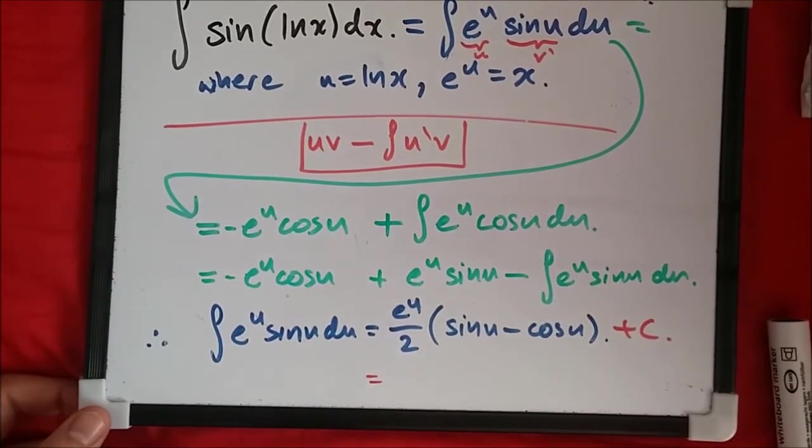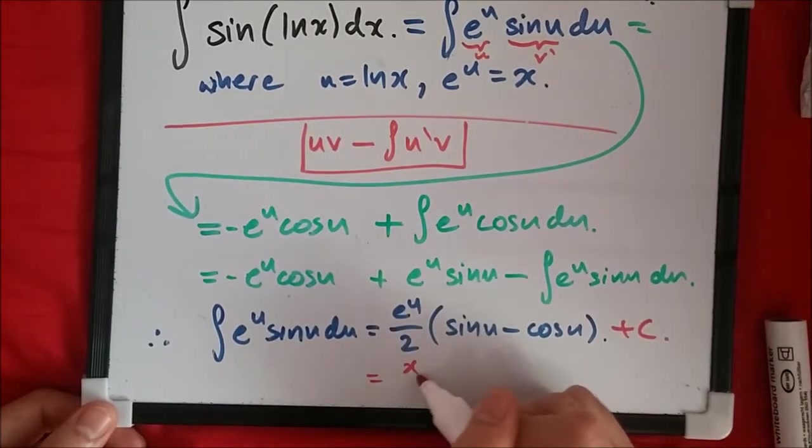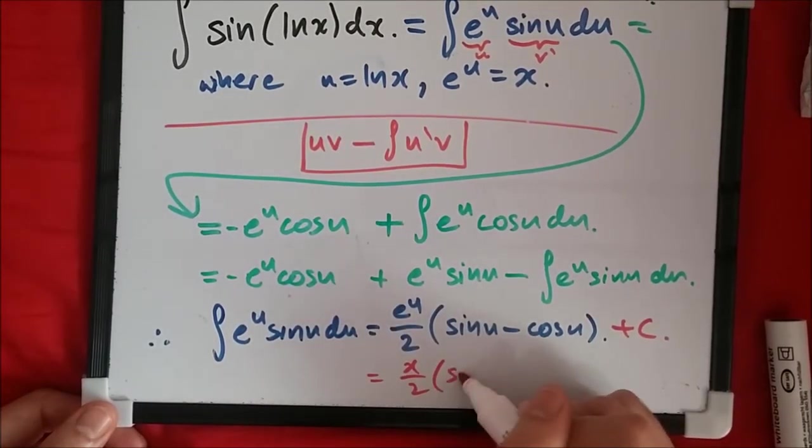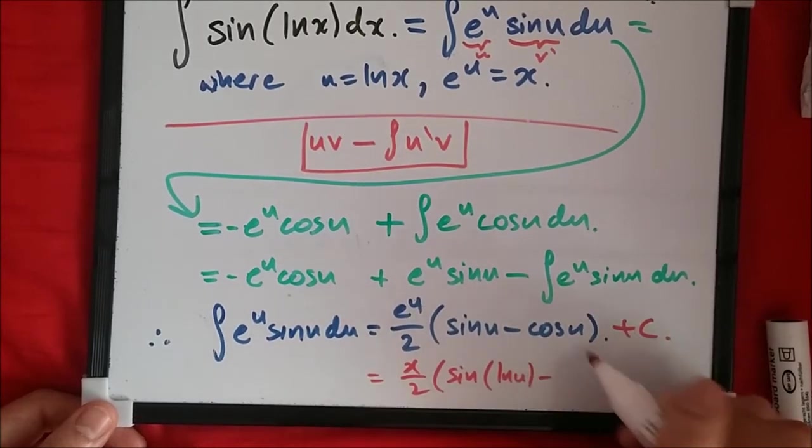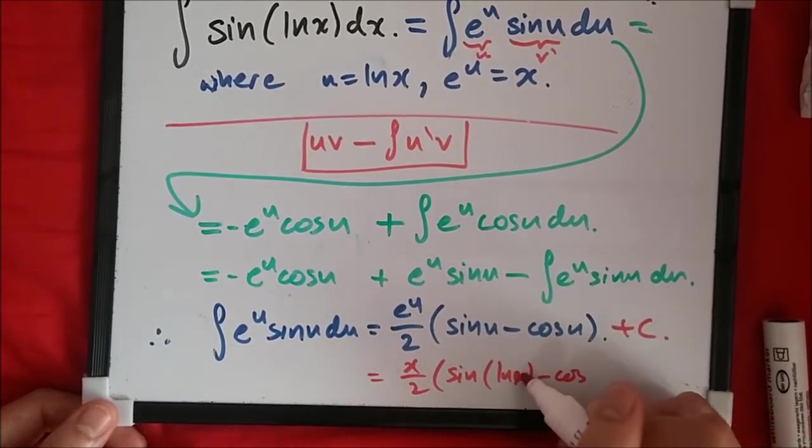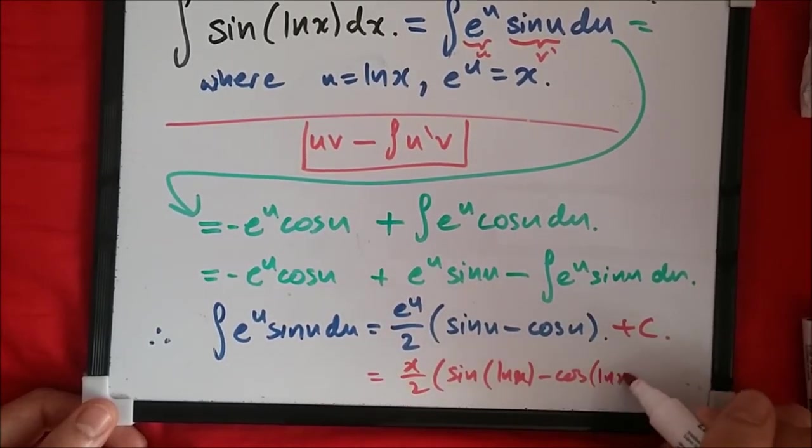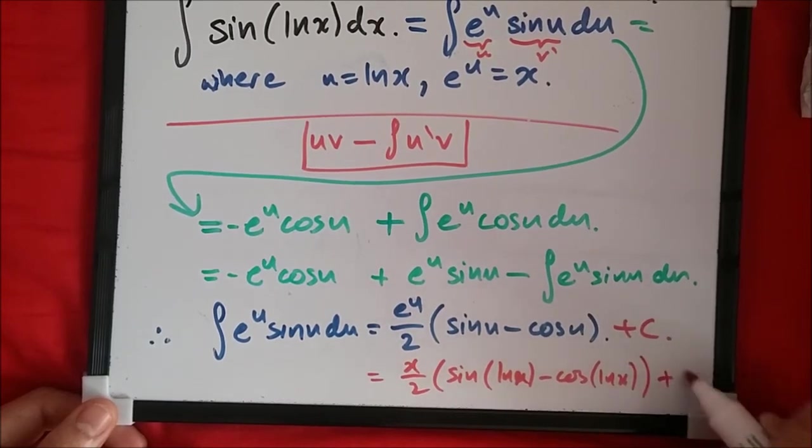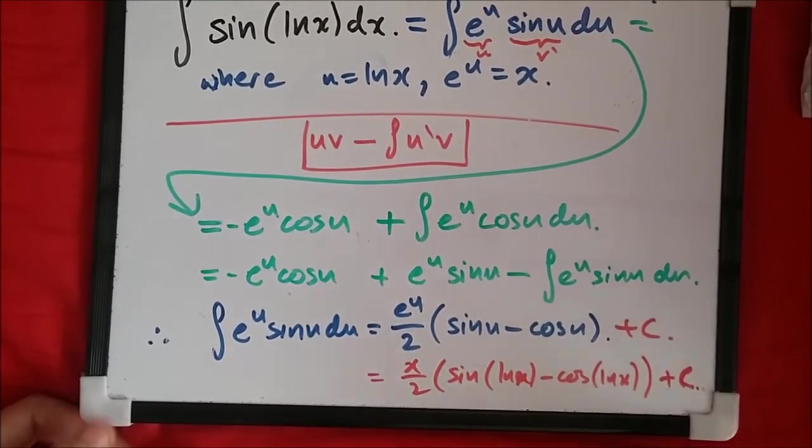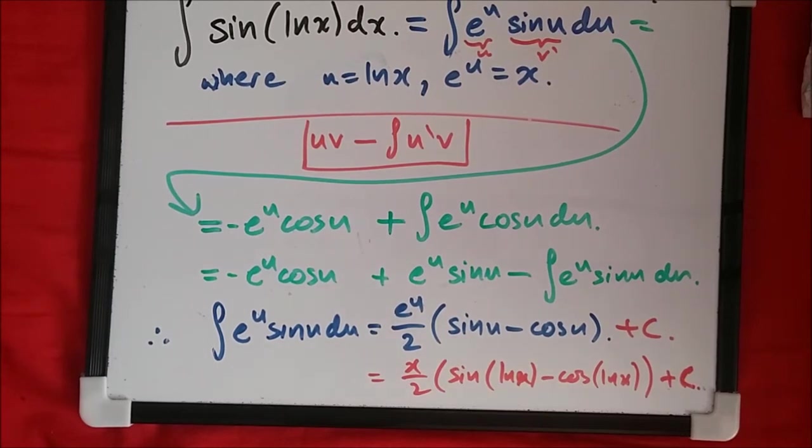We still need to replace u. Replacing this gives us X over 2 times sine of log X minus cosine of log X plus C. And there you have it guys: integrating by substitution and by parts to get this beautiful solution.